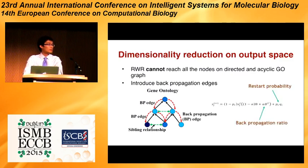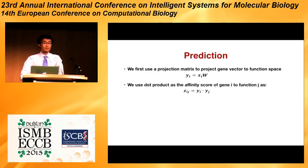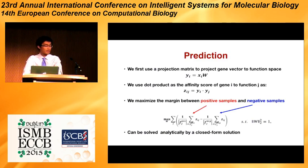We then apply the same multinomial logistic model to learn the low-dimensional representation for each function. Now we have low-dimensional representations for all genes and functions. We then do prediction in the low-dimensional space by projecting the gene vector into the function vector space using a projection matrix. Here, Xi is the low-dimensional vector for gene i, and Yi is the projected gene vector in the function space. We define the affinity score of gene i to function j as the dot product between the two vectors. If gene i is annotated to function j, their dot product will be very large. We learn the projection matrix by maximizing the margin between positive and negative samples, and this optimization can be solved analytically by a closed-form solution.